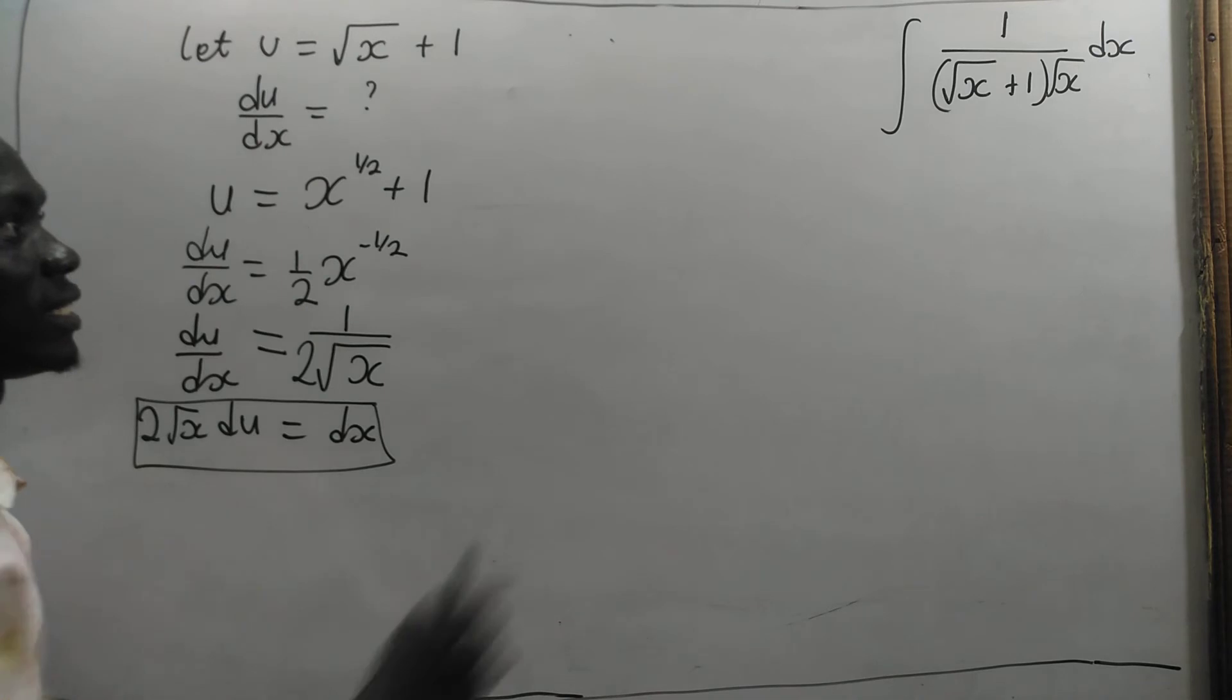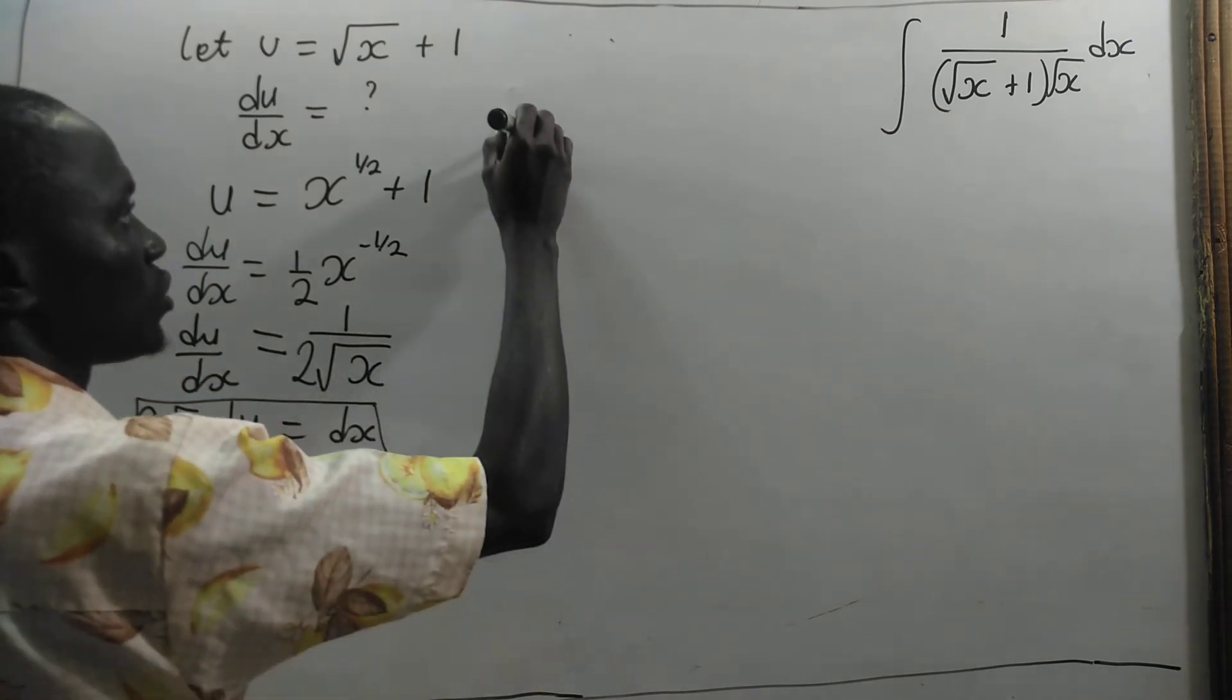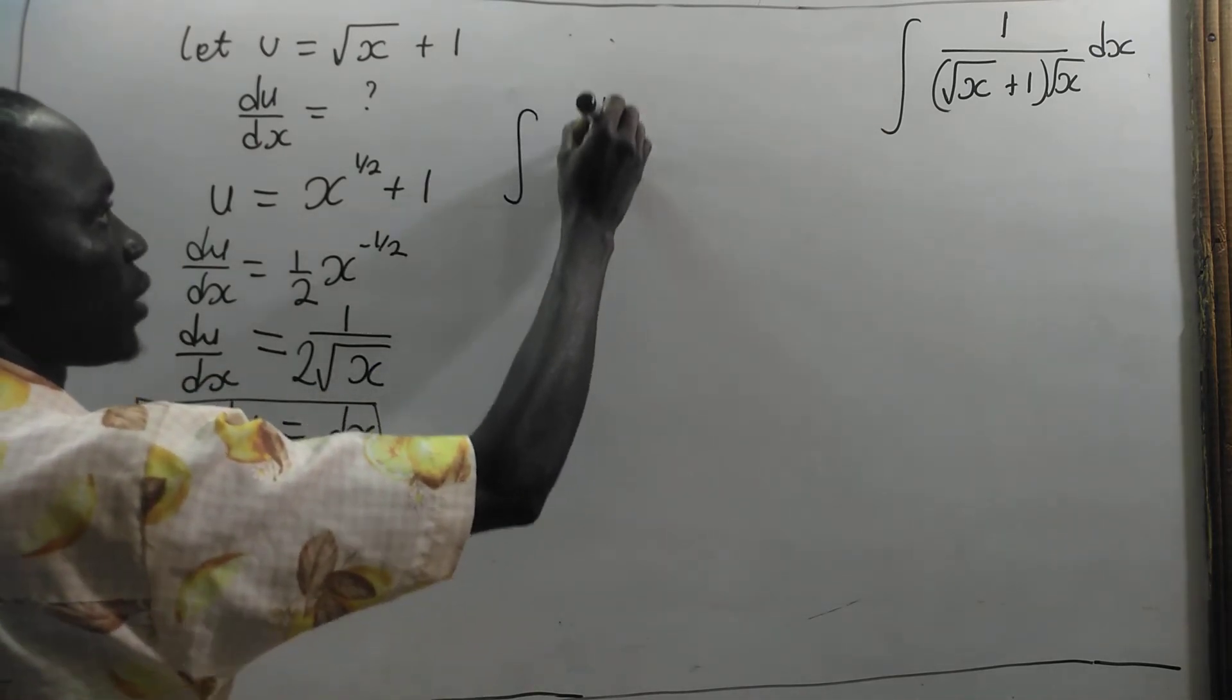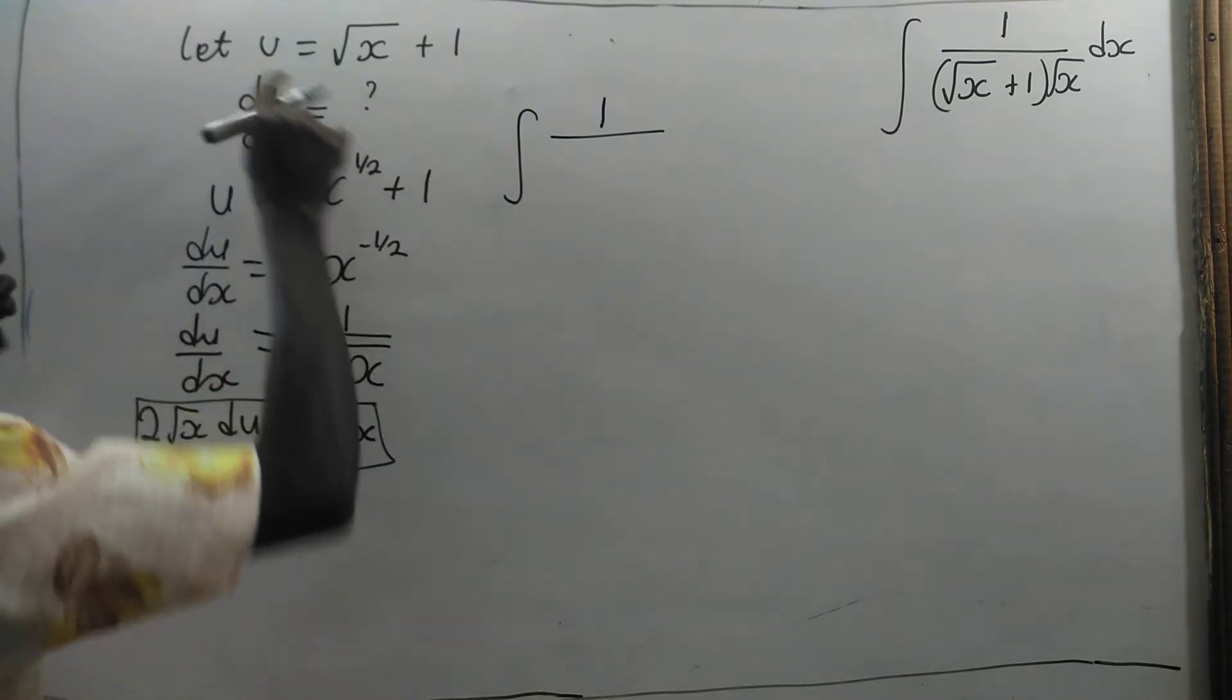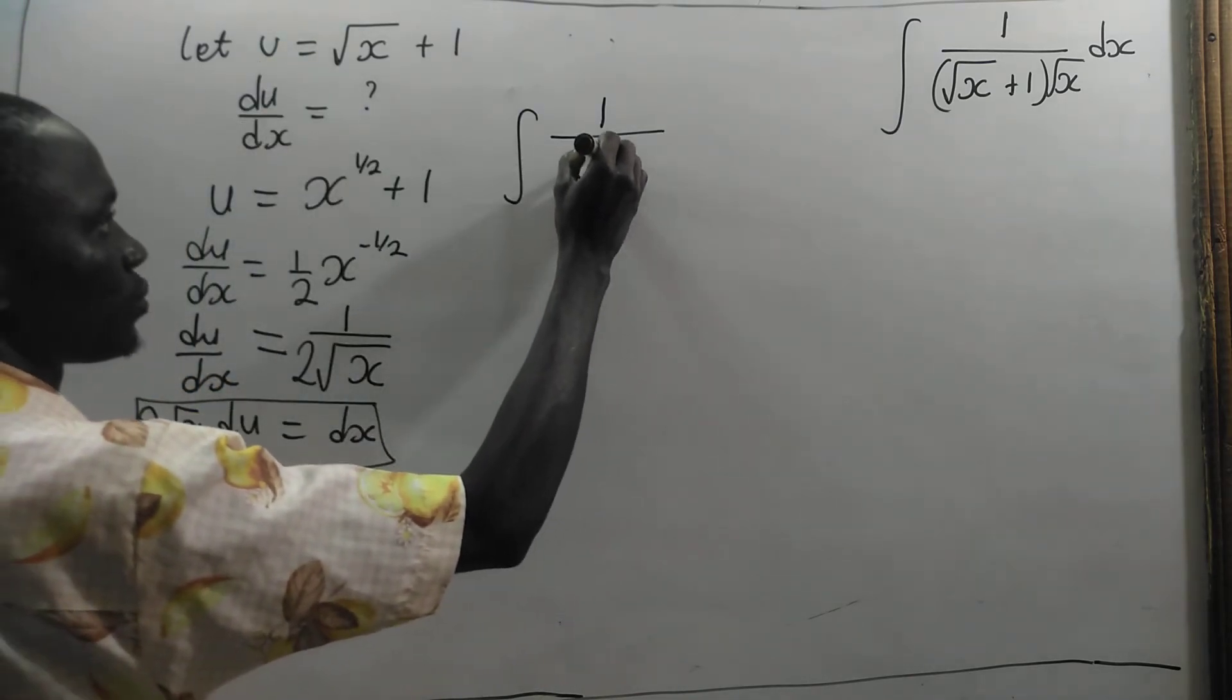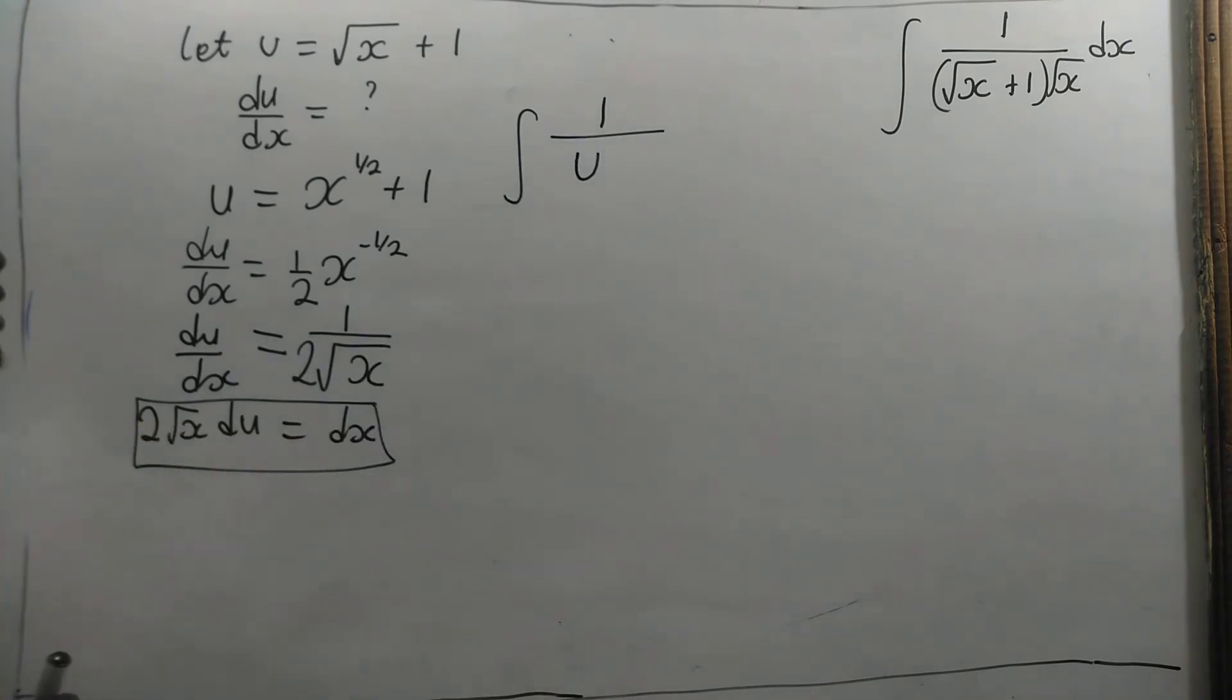So here this integral will now be equal to the integral 1 divided by root x plus 1 is u, so I will put in u.